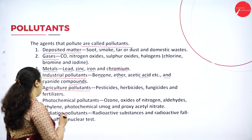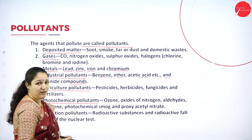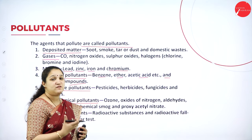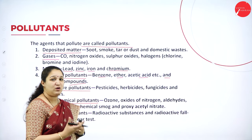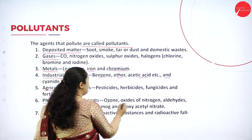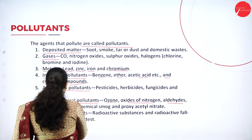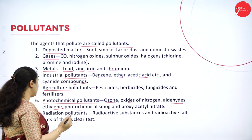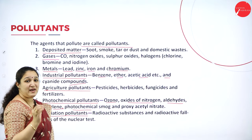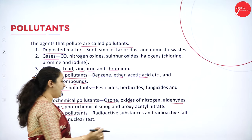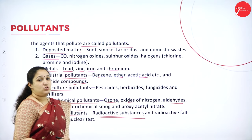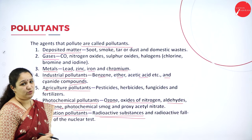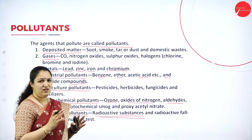Then we have agricultural pollutants — in agriculture we use pesticides, herbicides, insecticides, and fertilizers, which can act as pollutants. Then we have photochemical pollutants, which occur because of the presence of sunlight. The reaction happens because of sunlight, so ozone, oxides of nitrogen, aldehyde, ethylene, photochemical smog, and peroxy acetyl nitrate are photochemical pollutants.